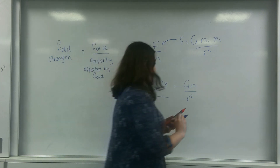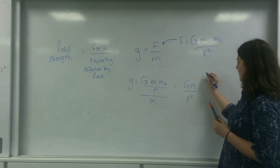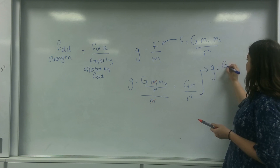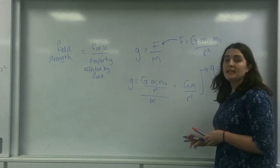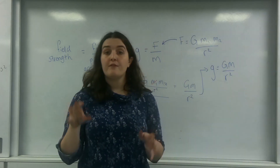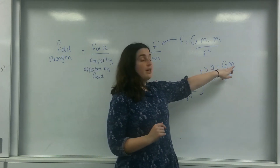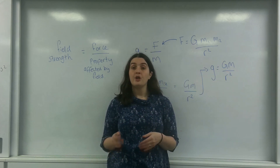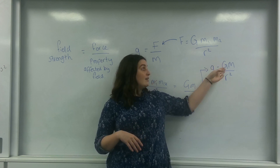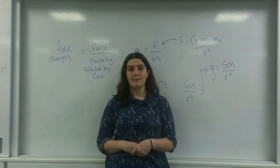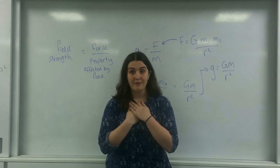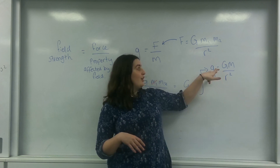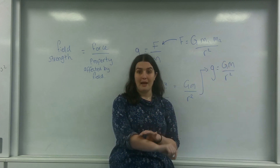This is really important because it tells us that the gravitational field strength is big G times M over R squared. What it tells us is that the field strength we're feeling is due to the object whose field we are in. So if we are in the Earth's gravitational field, we feel a field strength based on the Earth's mass — it doesn't matter how much mass I have, the acceleration I feel is dependent only on the Earth's mass.